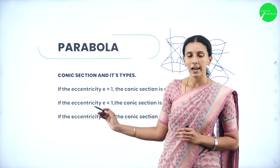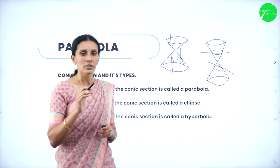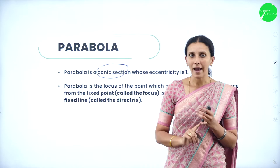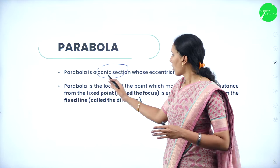Now we know what a parabola is. A parabola is a curve whose eccentricity is 1. It is a part of a cone, hence called a conic section. Parabola, hyperbola, and ellipse are all parts of a cone, hence they are called conic sections.